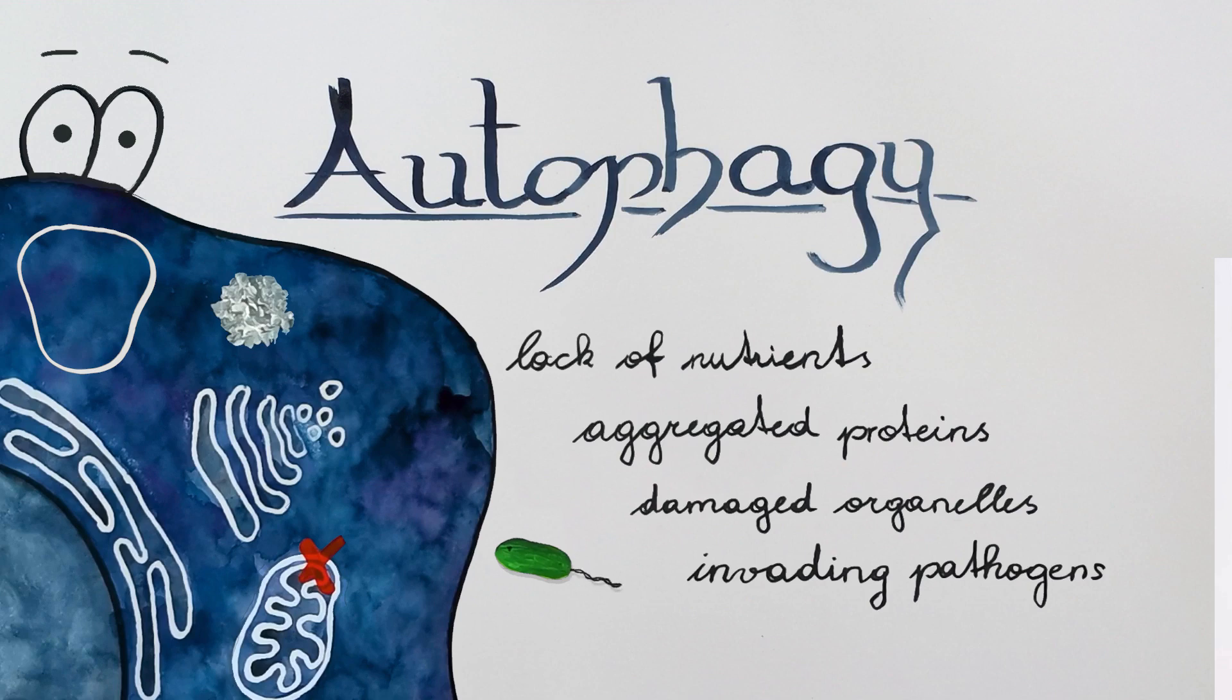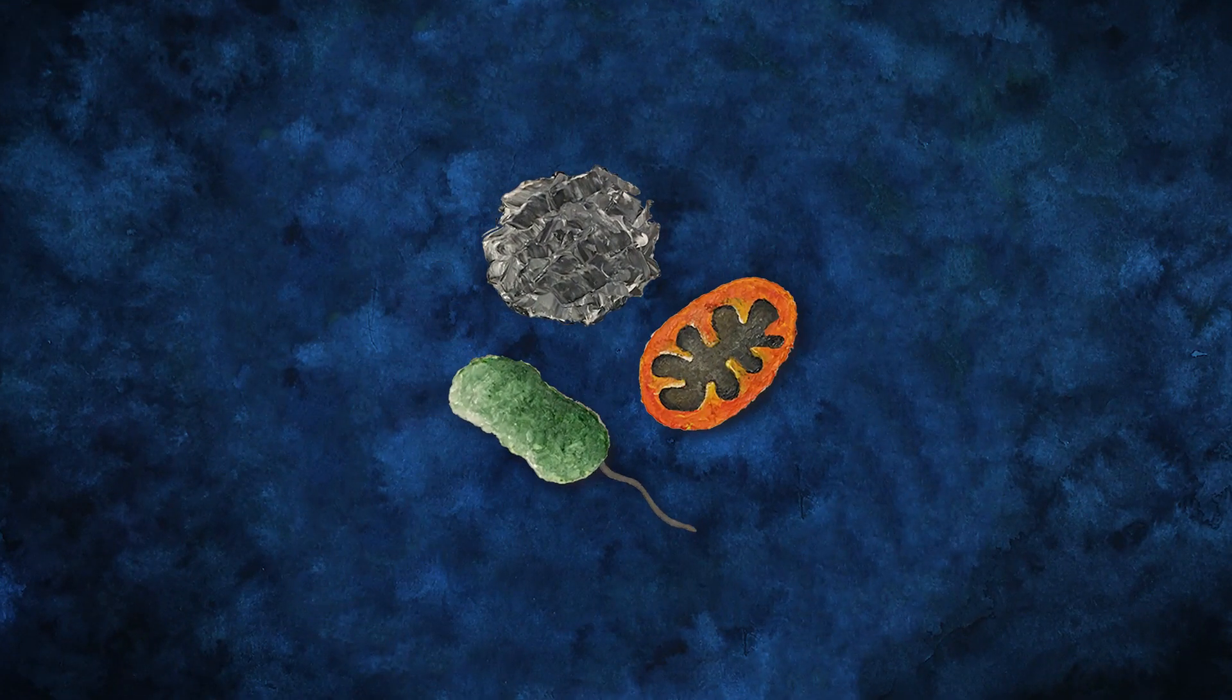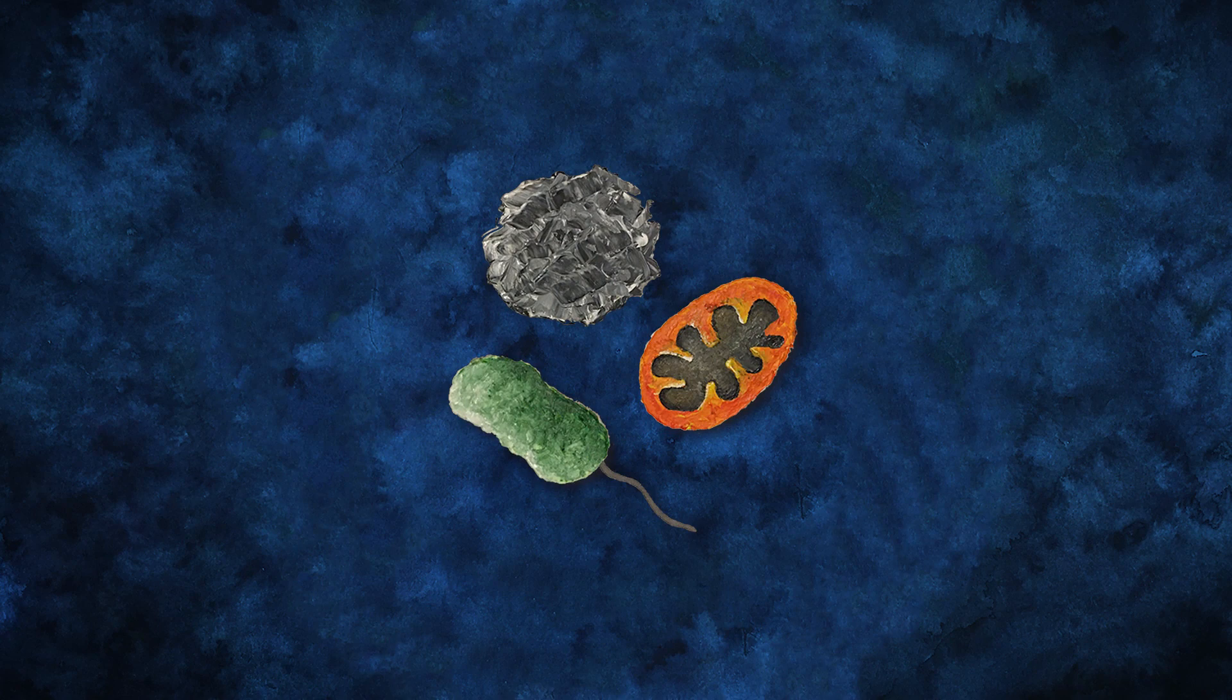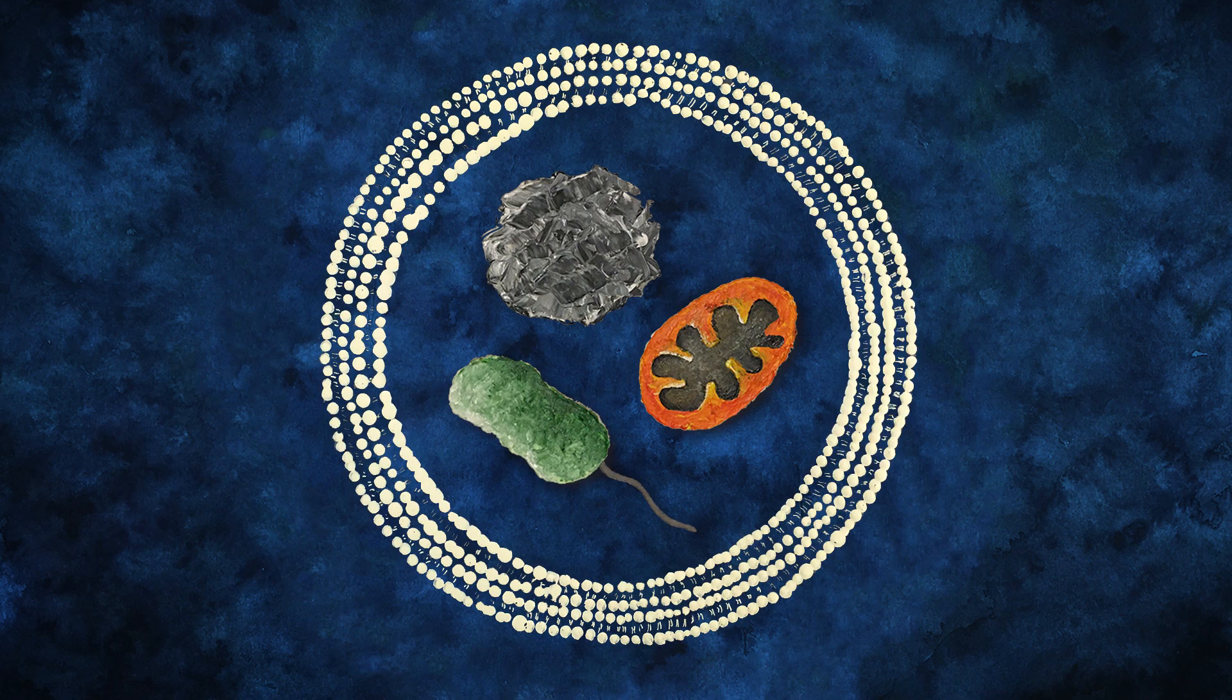To figure this out, I suggest we take a closer look into the cell. In order to be degraded, the harmful material is enwrapped in a double membrane structure. The formation of this structure starts with a small cup-shaped membrane that continues to grow all around its cargo material.